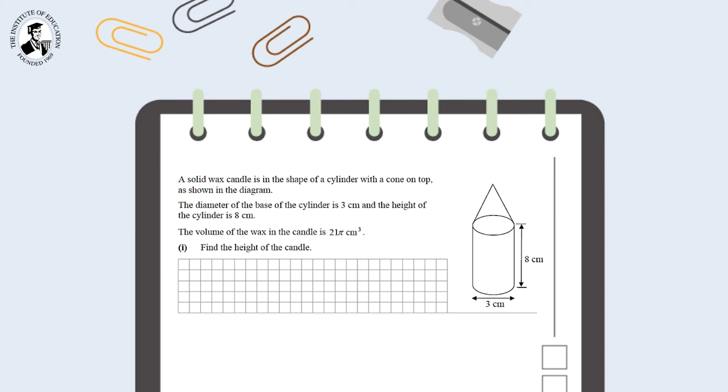There are several points that students should note. Firstly, as the cone sits exactly on top of the cylinder, the diameter of the base of the cylinder can be transferred upwards and is also the diameter of the cone.